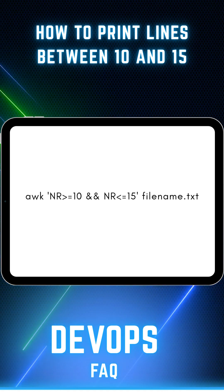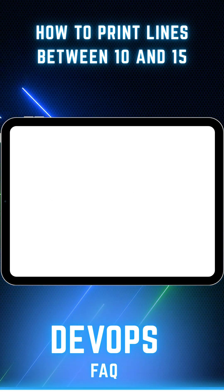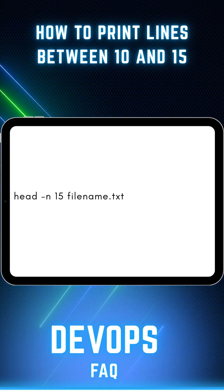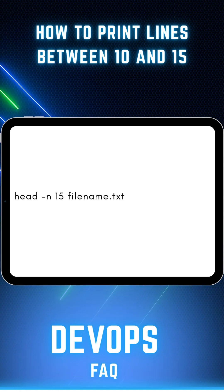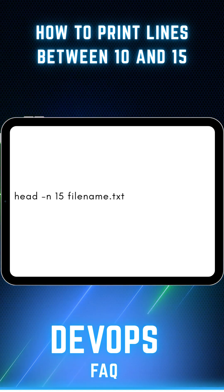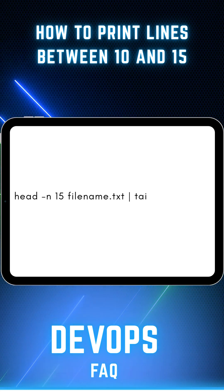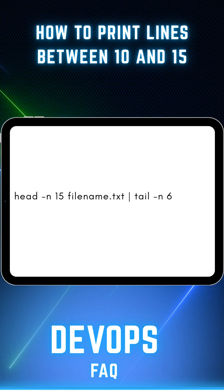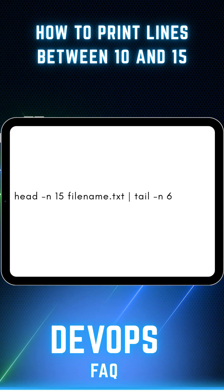The second approach is using the head and tail commands together. First, run head -n 15 filename.txt to get the top 15 lines, then pipe it to tail -n 6. This prints the last 6 lines of that output, giving us lines between 10 and 15.